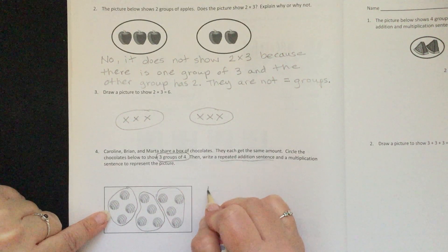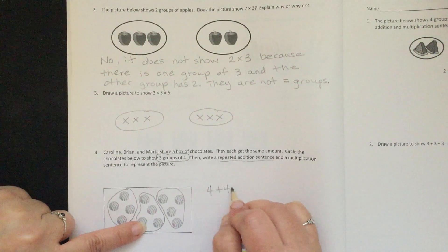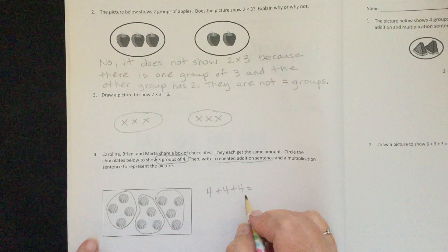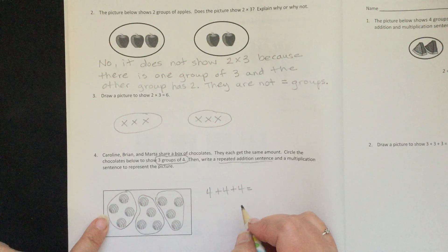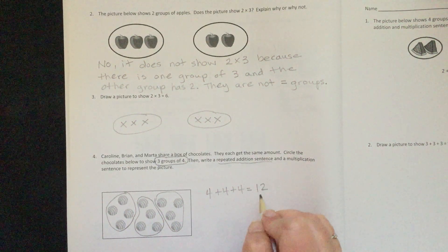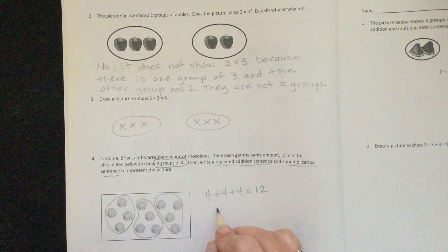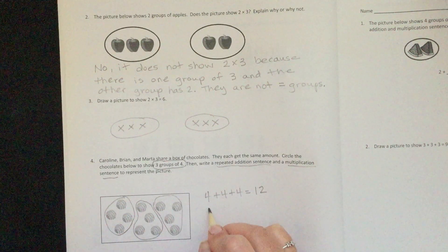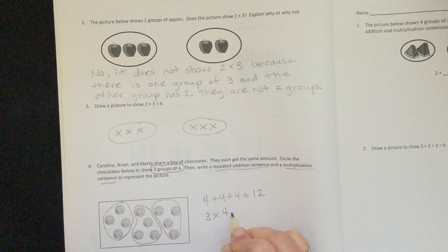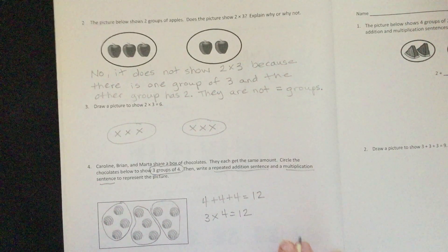We need to write a repeated addition sentence. We have to do how many are in each group: 4 plus 4 plus 4 equals—remember, we can count by 4s—4, 8, 12. And a multiplication sentence: we have 3 groups times 4 in each group. So 3 times 4 equals 12.